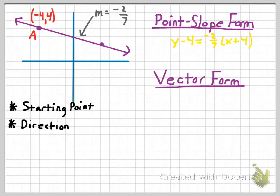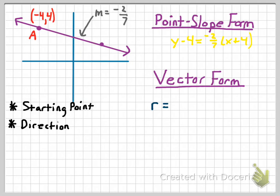It turns out that we can use vectors to describe each of these two things. We can use a vector to describe where the starting point for a line is, and we can use a vector to describe the direction that a line is going as well — which is partly what a vector does. One thing you're going to get used to is that instead of using X and Y, we're going to use the variables T and R, where R corresponds with Y and T with X. When writing the vector form, it's going to be R equals something.